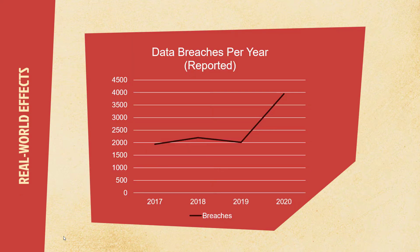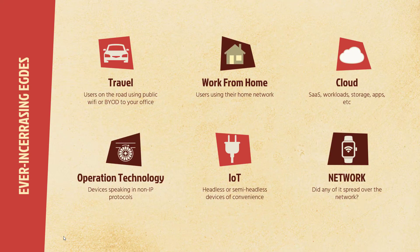Here are some statistics on breaches per year. You'll notice things are pretty even until 2020, the year of the breach. You'll hear people say that's just because everybody moved to work from home — well, a breach is a breach. It doesn't matter how it got in there. It doesn't matter if it got in from your coffee maker. Working from home doesn't mean these breaches don't mean anything. It's because we have all these new edges.